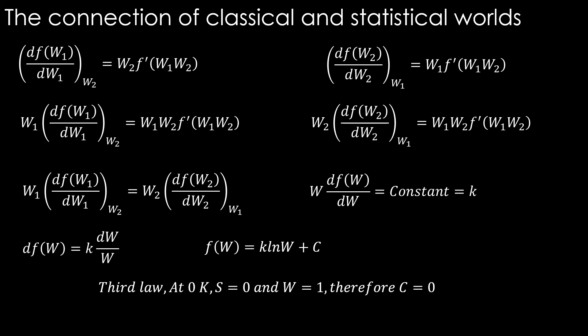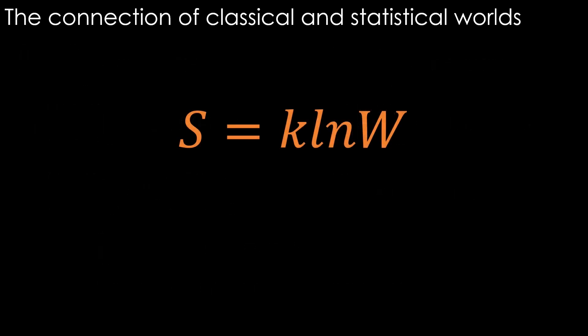And finally we get the profound equation of second law from statistical mechanics. It says S is equal to a constant multiplied by natural log of W. This is the statistical interpretation of entropy. Entropy is a measure of W. That's what it says. W here is the number of microstates in the most probable macrostate. It is the equilibrium state in which the entropy has reached maximum.